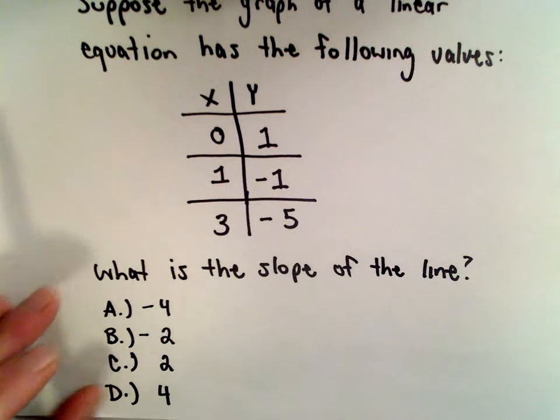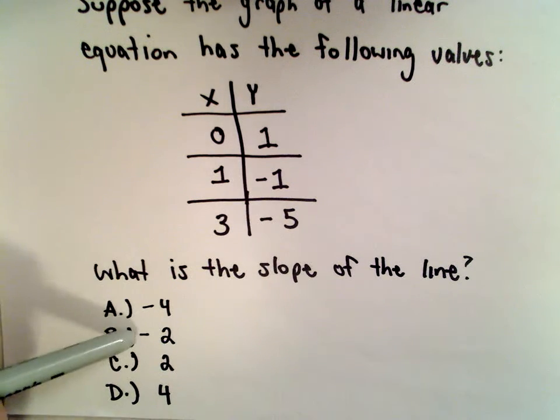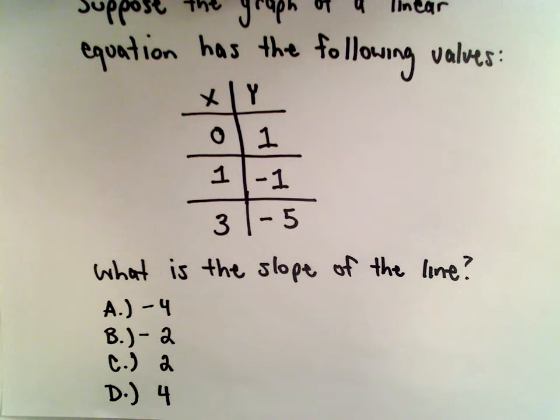We want to know what's the slope of the line. Is it negative 4, negative 2, positive 2, or positive 4?